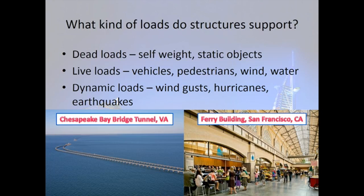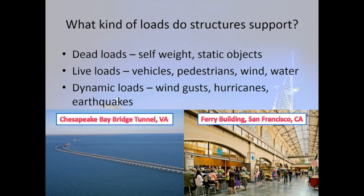Not all structures have to be designed for the same kind of loads. What kind of loads would we need to design for in the pictures shown? Take a few minutes to discuss your thoughts. The bridge pictured in the lower left corner will have dead loads from the weight of the structural materials and from any street lights or signs, live loads from vehicles, wind, and water, and dynamic loads from hurricanes since it's in Chesapeake Bay. The building pictured in the lower right corner will have dead loads from the weight of structural materials, tables and chairs, and vendor stands and signs, live loads from the people, and dynamic loads from earthquakes since it's in San Francisco. All structures will have dead and live loads, but not dynamic loads — whether or not dynamic loads need to be added will depend on the location of the project. A bridge or building in Ohio would not require dynamic loads.